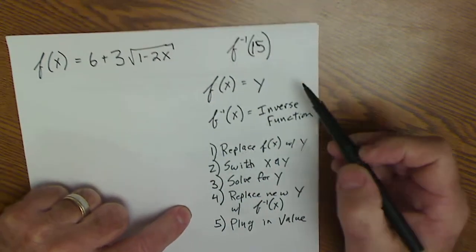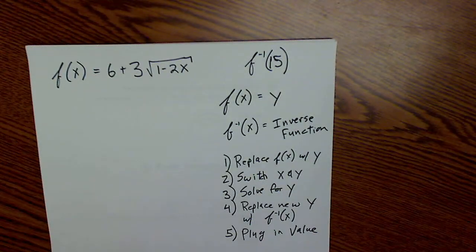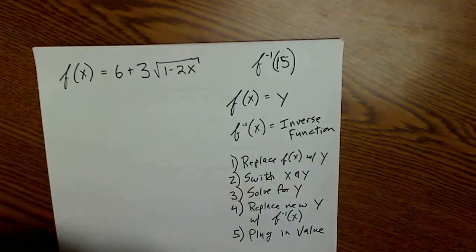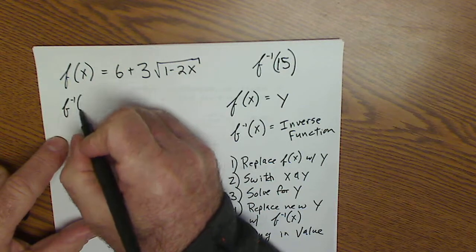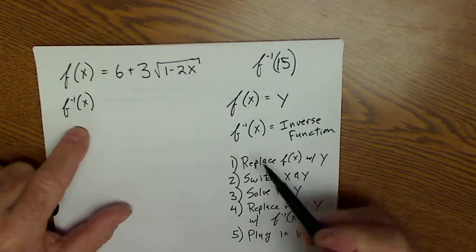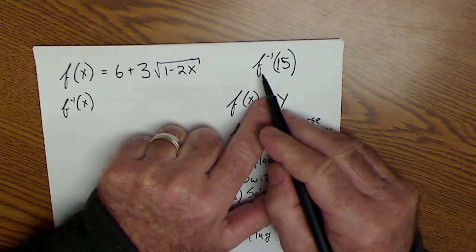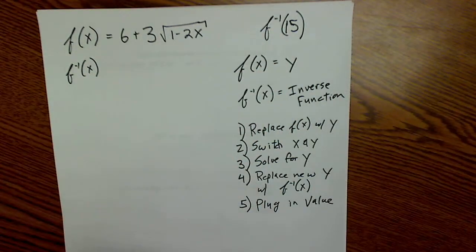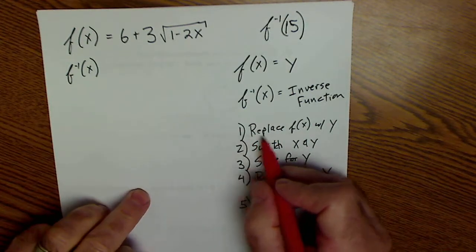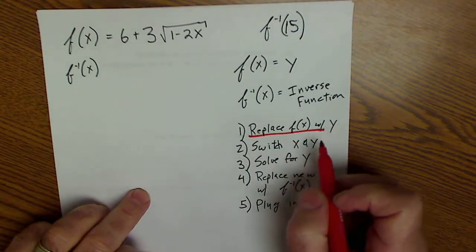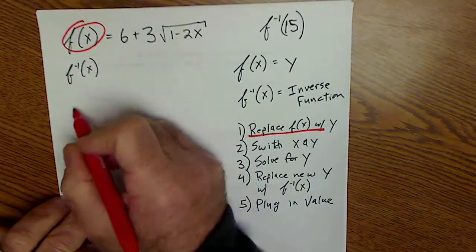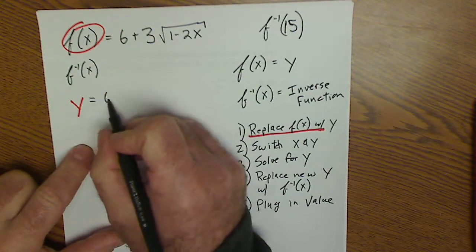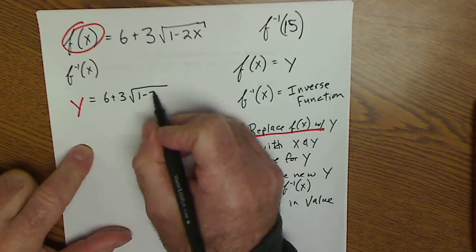This is a common two-step problem. Step 1 is to find the inverse function, and Step 2 is to take 15 and plug it into that inverse function. Using a red pen, the first thing I'll do is replace f(x) with y, so f(x) becomes y = 6 + 3√(1 − 2x).